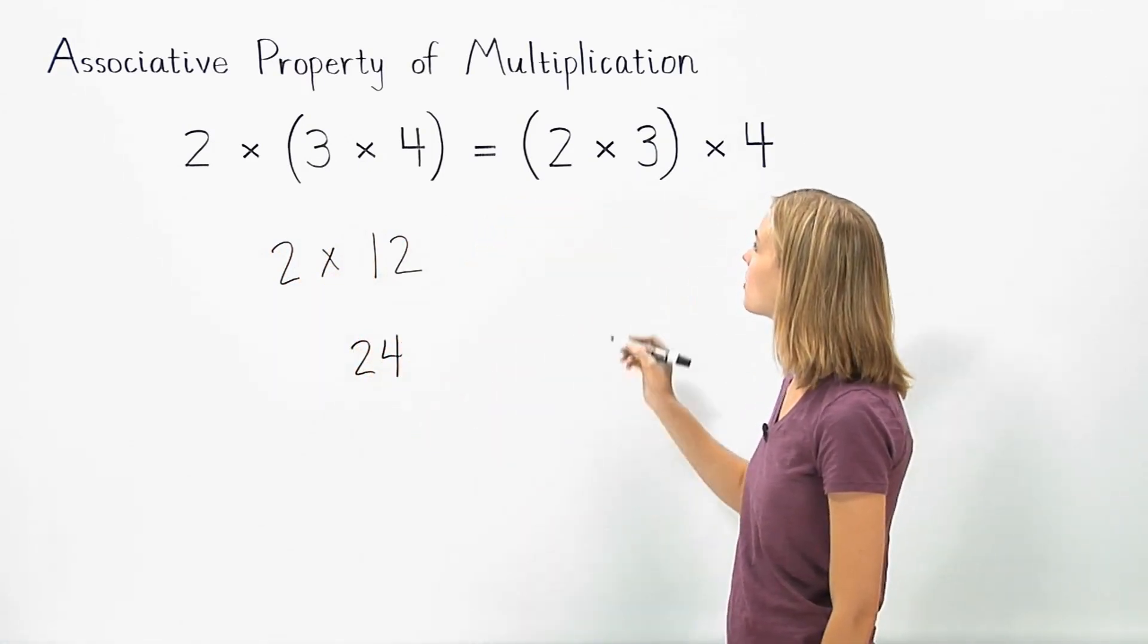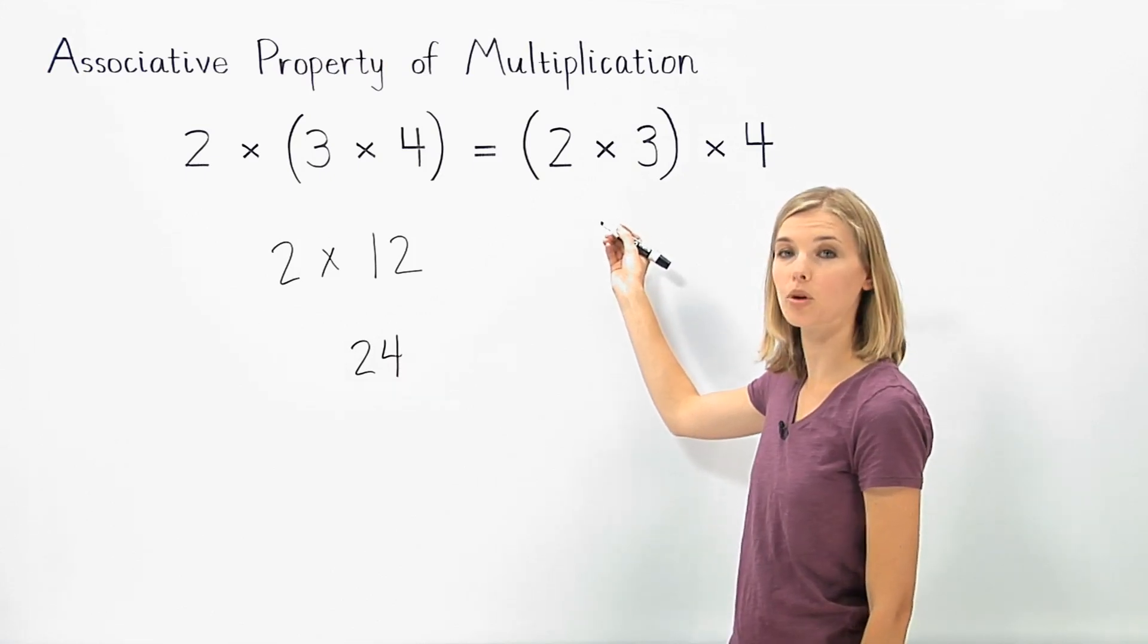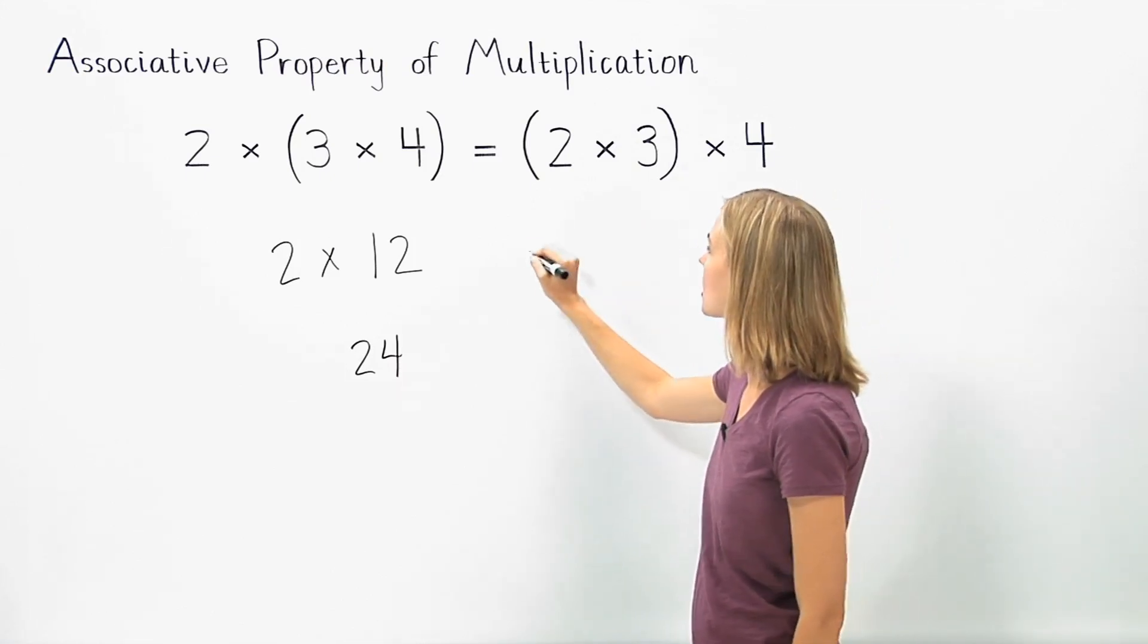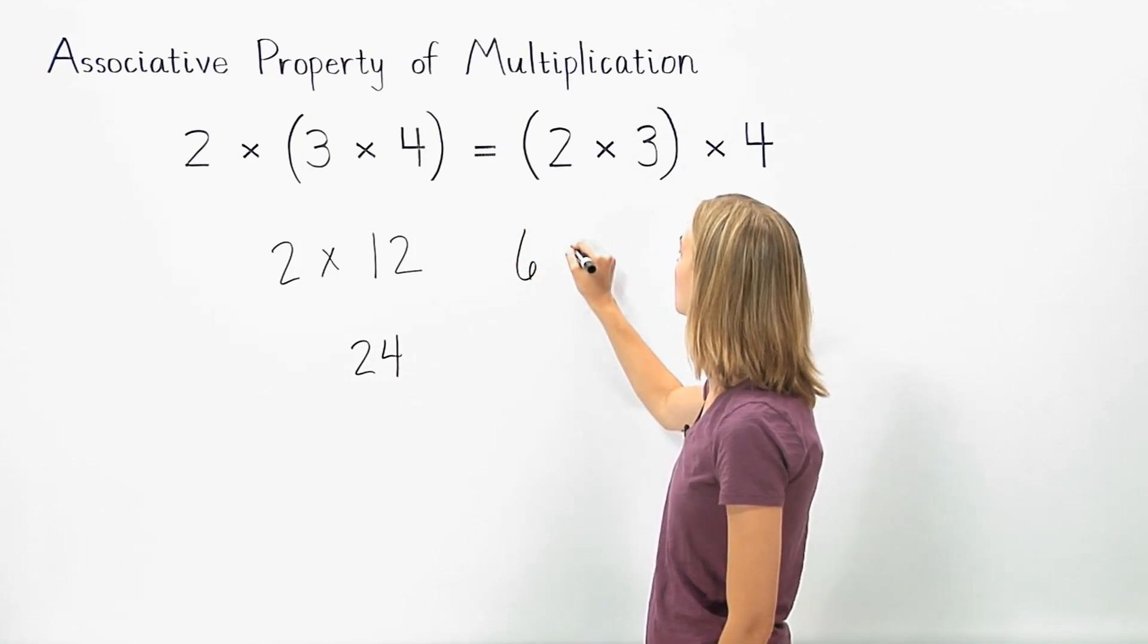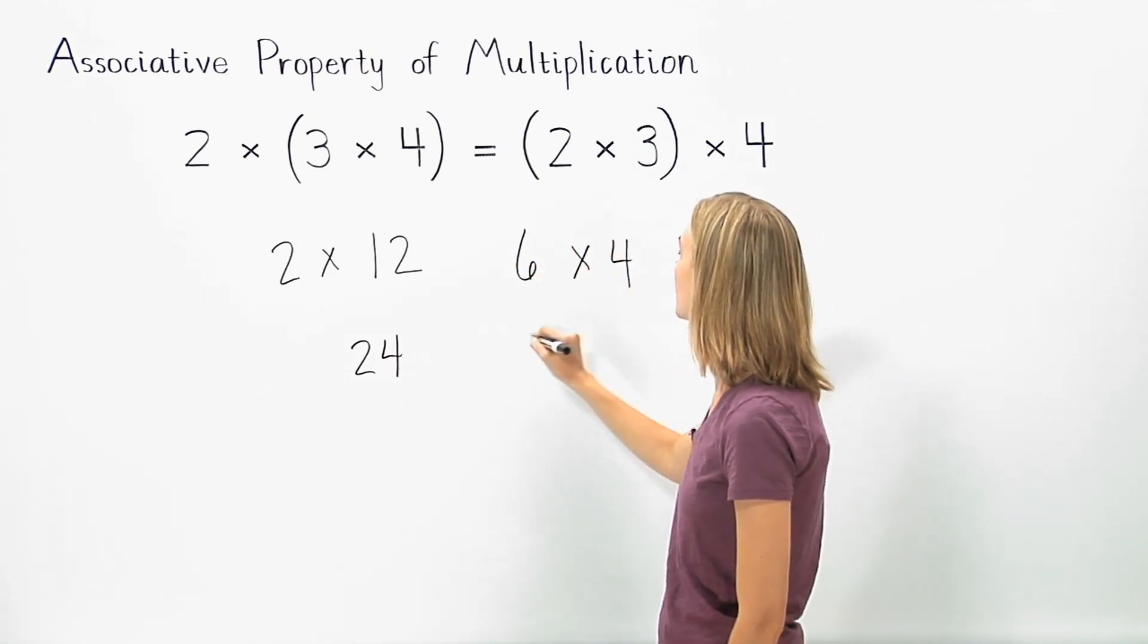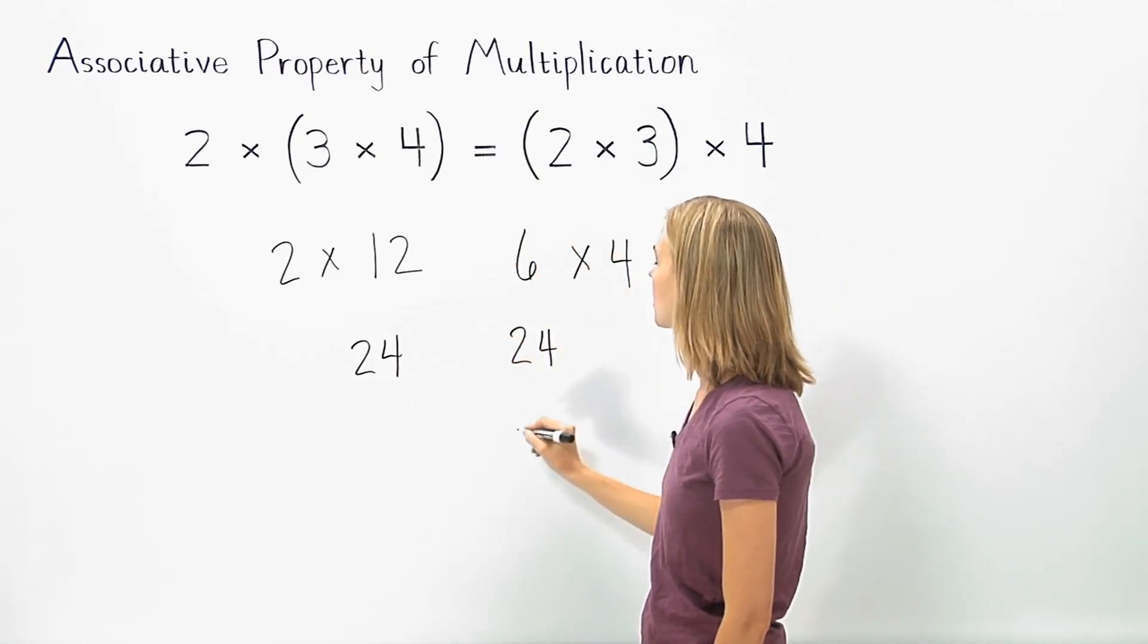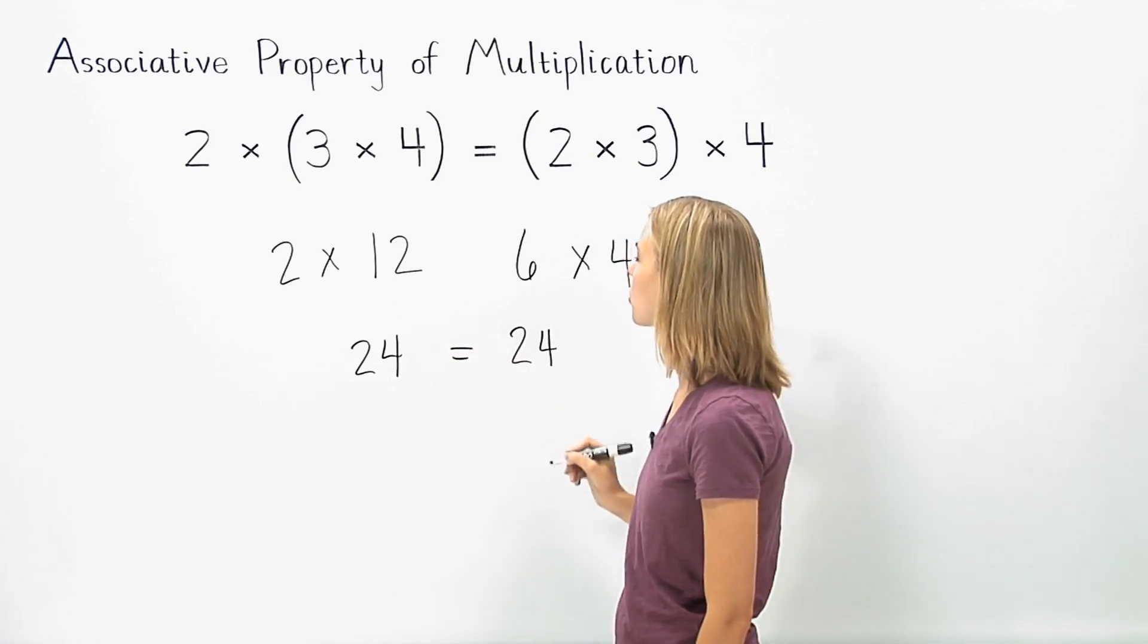And on the right side of the problem, we must also simplify inside the parentheses first. So 2 times 3 is 6, and 6 times 4 is 24. So we have 24 equals 24.